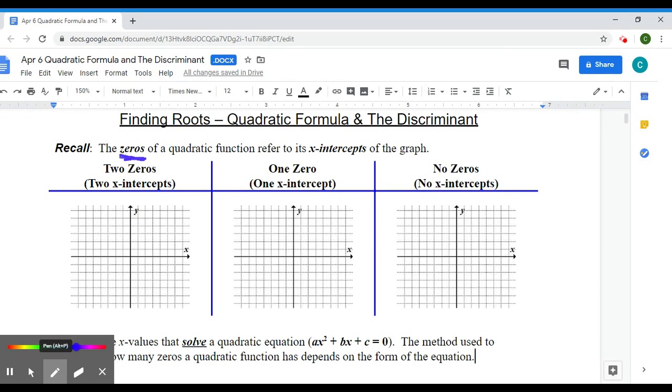Before we go any further, let's remember that the zeros of a quadratic formula are the x-intercepts of the graph. We know a quadratic looks like this if I have a plus x squared, and we know it looks like this if I have a negative x squared.